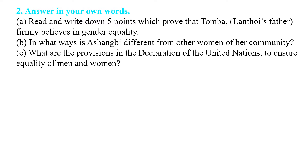Second, Thomba was supportive of Ashangbi's activities — whatever Ashangbi used to do, Thomba supported her. Third, he was always proud of his wife in all her work. Fourth, in times of need he helps his wife and children. Fifth, he does not discriminate between a man's work and a woman's work — he shares equality with Ashangbi in household chores like cooking and washing.